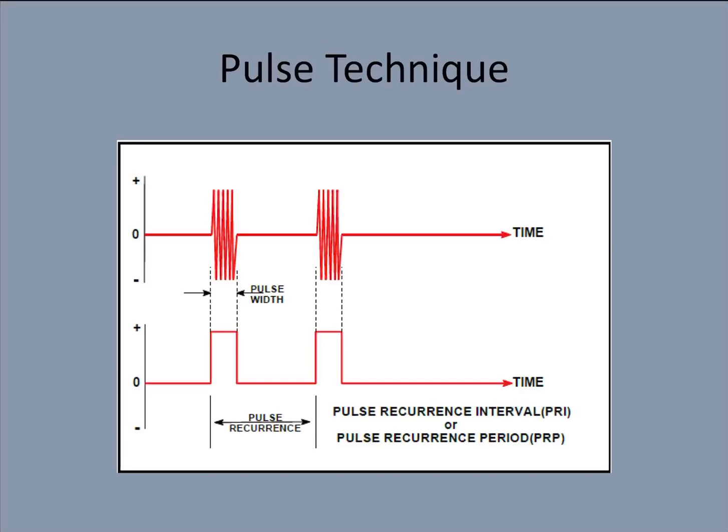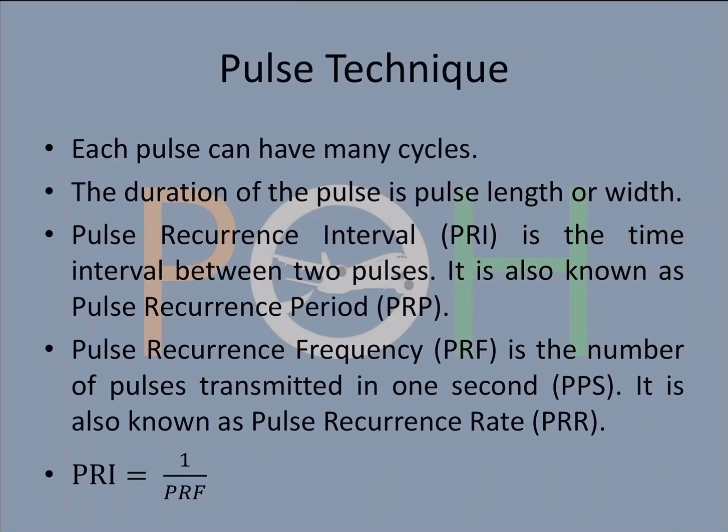Coming to the pulse technique, what you see here is a pulse. Within a pulse you will have a lot of cycles. This is pulse width, the width of the pulse or pulse length also they call it. The time between two pulses is actually called pulse recurrence interval or PRI. Each pulse can have many cycles as I just showed you, and the duration of the pulse is the pulse length or the width.